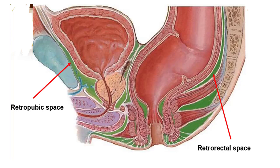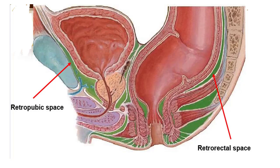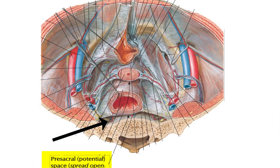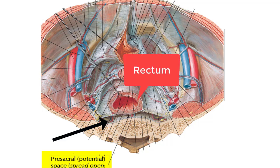Anatomically there are two important spaces: the retropubic space, which is posterior to the pubic bone, and the retrorectal space, which is posterior to the rectum. The retrorectal space is also known as the pre-sacral space, as it is anterior to the sacrum.